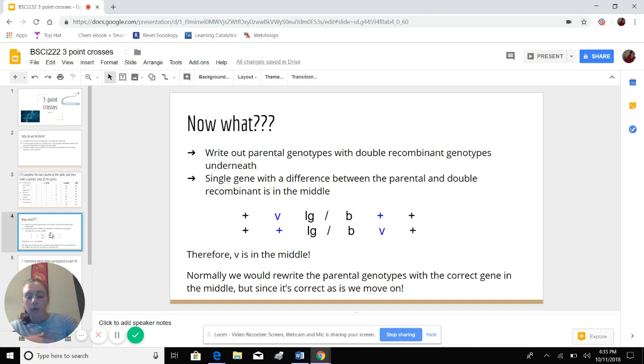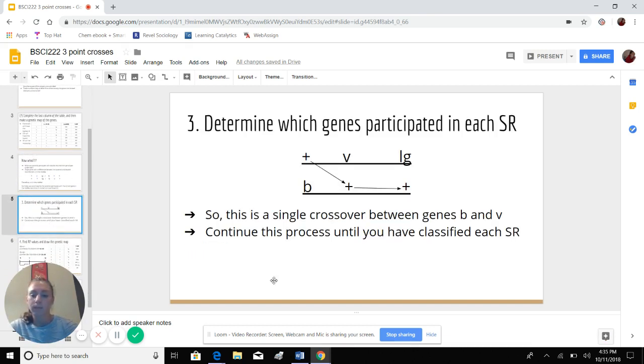So moving forward we know that V is in the middle, and that's what we're given right now. So normally we would rewrite the parental genotypes with the correct gene in the middle. But since it's correct as is, then we can move on. So the next step we have the parentals written out. So we can now determine which genes participated in which single recombinant species.